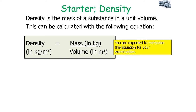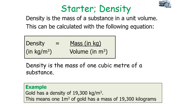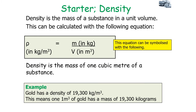You are expected to memorize and rearrange this equation for your examination. It's also important to note that you can consider density as the mass of one cubic metre of a substance. So if you have a density of 19,300 kilograms per metre cubed, this means one metre cubed of the material has a mass of 19,300 kilograms. We can symbolize the equation as rho equals m over v.